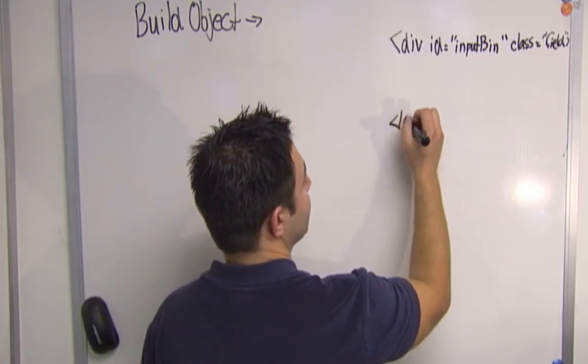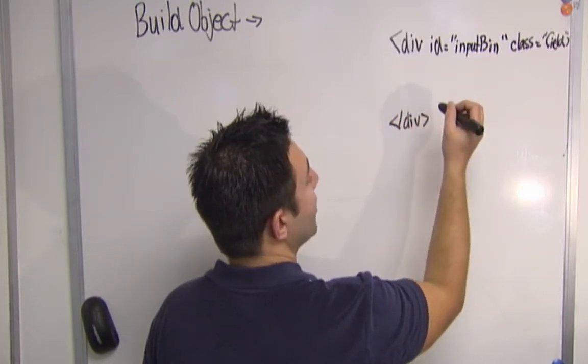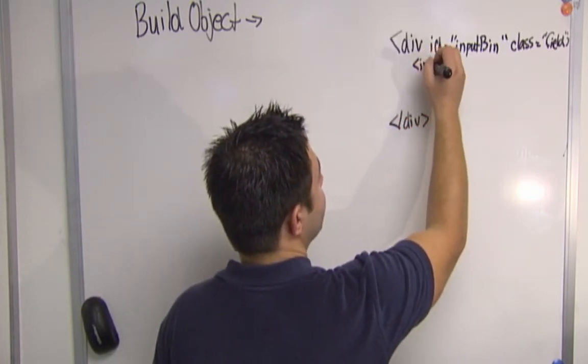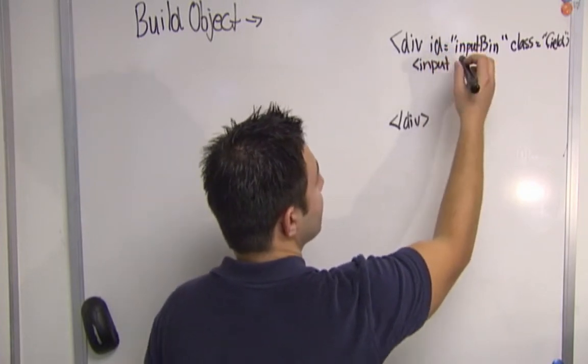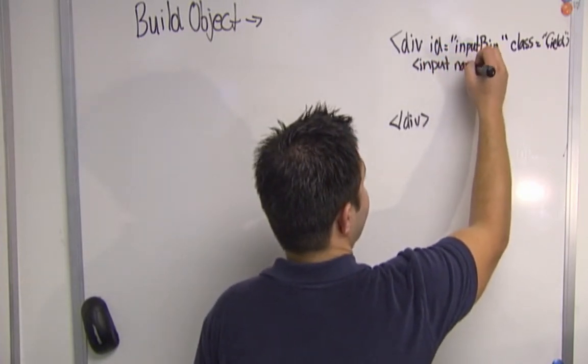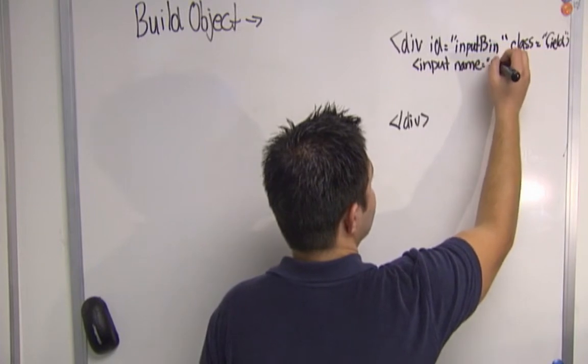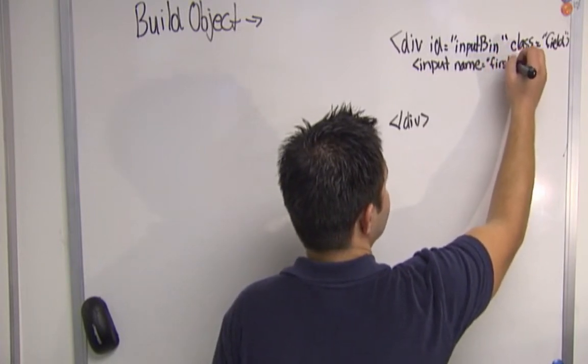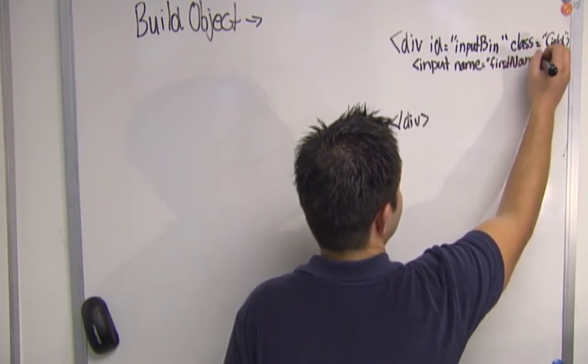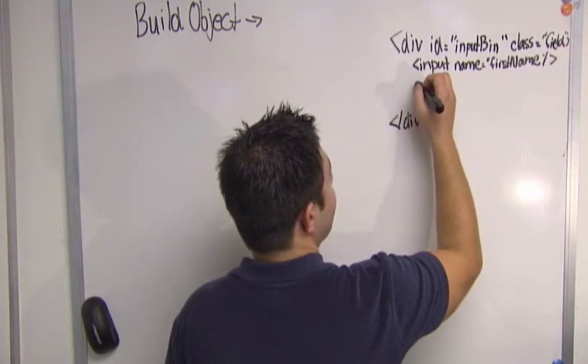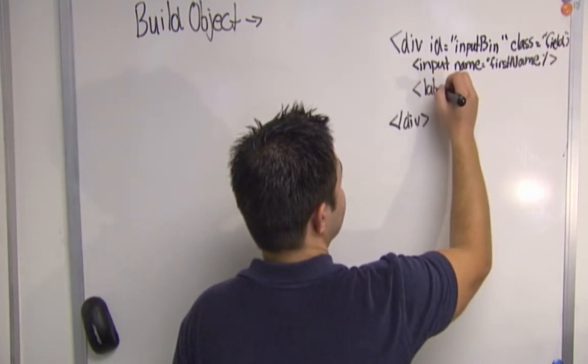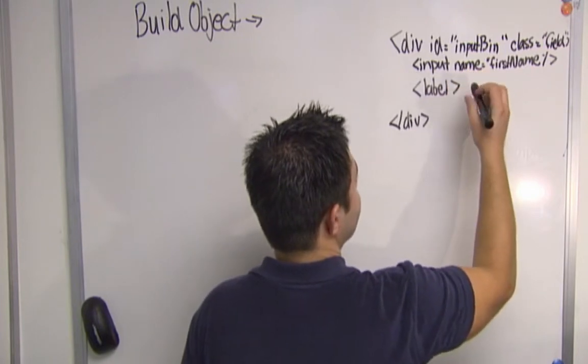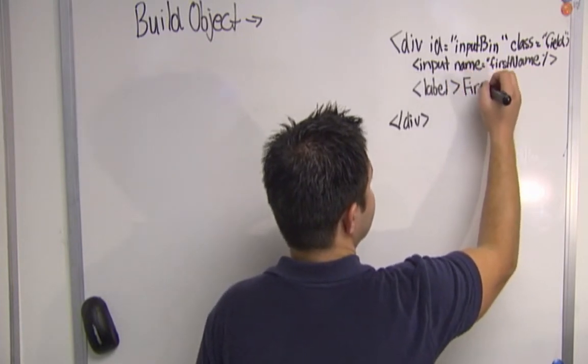And inside of this div, I want to create an input field with name first name, and a label that says first name.